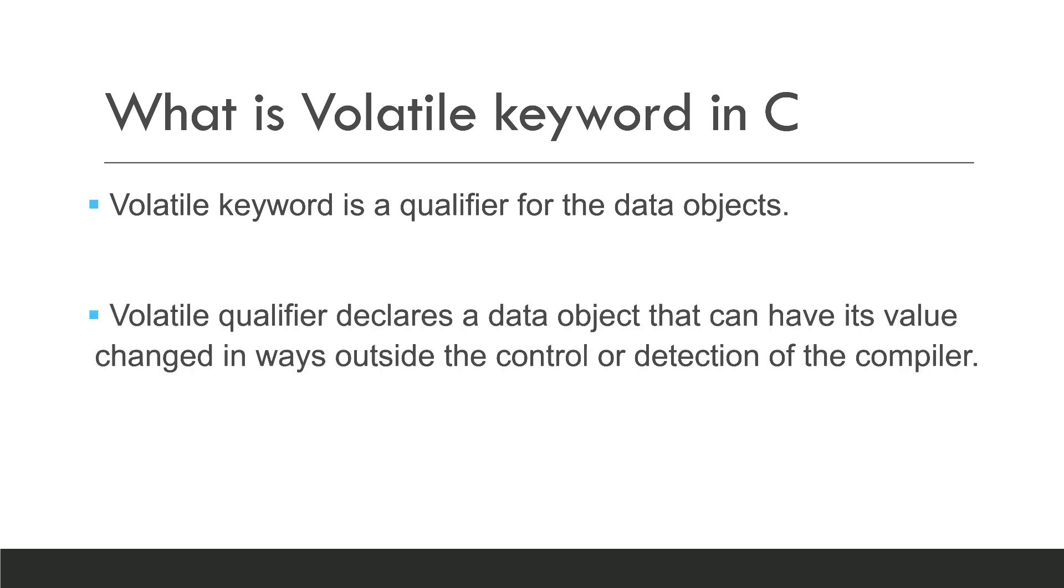The volatile qualifier declares a data object that can have its value changed in ways outside the control or detection of the compiler. This means the compiler will not optimize the code for our volatile data object because its value may change in some other block of code.